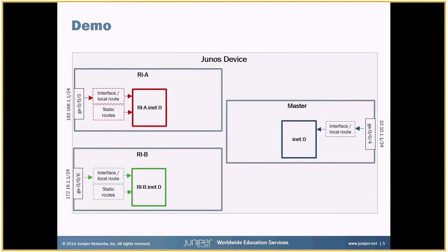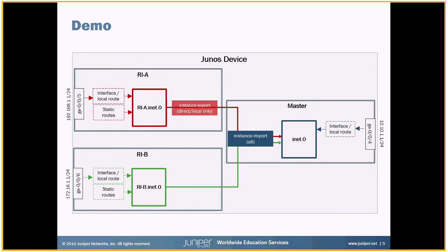Let's get into the demo. Here's our Junos device: on the right side is the master routing instance, and on the left are two routing instances we've configured. Each has its own interface, IP address assigned, and local and direct routes fed into each routing table. We've also configured some static routes in the routing instances. We'll start by using an instance import statement in the master routing instance to import routes from each routing instance into the master. Then we'll use instance export in routing instance A to allow only direct and local routes, and in routing instance B to allow only static routes.